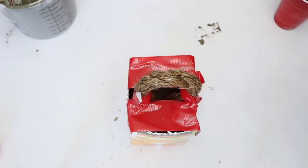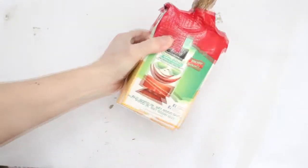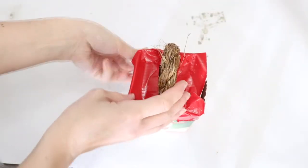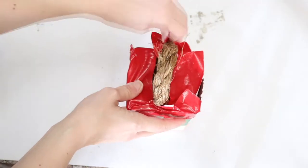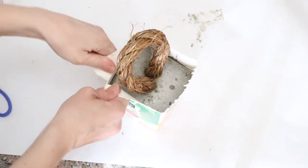Once everything is secure with duct tape, let this dry for at least 20 hours. Now that everything is solid, it's time to remove the tape and the container. Using a juice container like this is great because you can easily rip it apart.